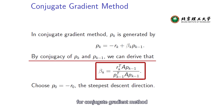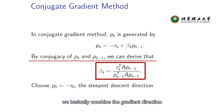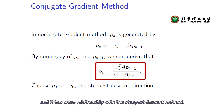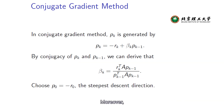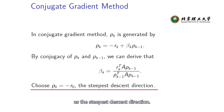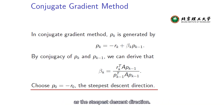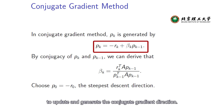In other words, for the conjugate gradient method, the search direction pk combines the gradient direction as well as the previous search direction. It's a very simple approach and has a close relationship with the steepest descent method. For the starting point, the first search direction p0 is set as the steepest descent direction. From the second direction onward, we use the formula to update and generate the conjugate gradient direction.